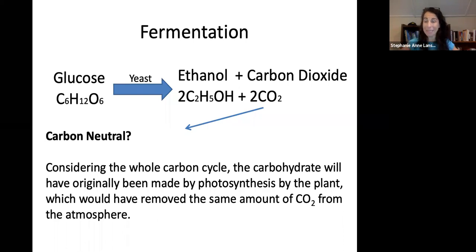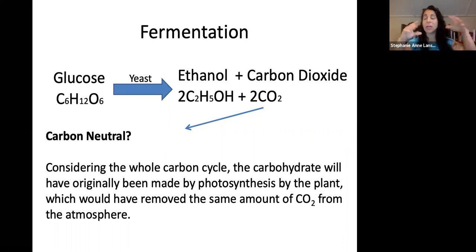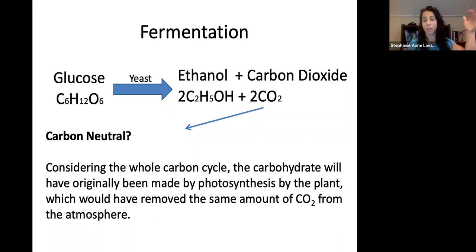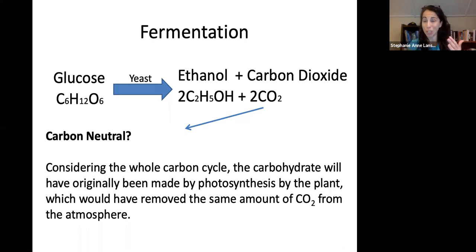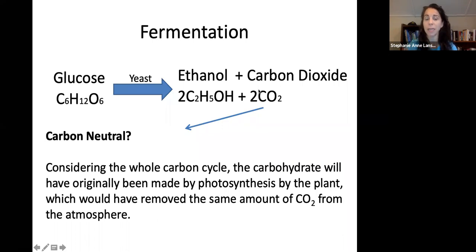The CO2 produced — when you consider the whole carbon cycle — originally came into the glucose through the photosynthesis process. So that equal amount of CO2 that came in comes back out during this fermentation process by yeast. There may be other CO2 inputs from transportation fuel, harvesting of the corn, and fossil fuel-based fertilizer, but the CO2 from the fermentation equation itself came in through photosynthesis of the corn.